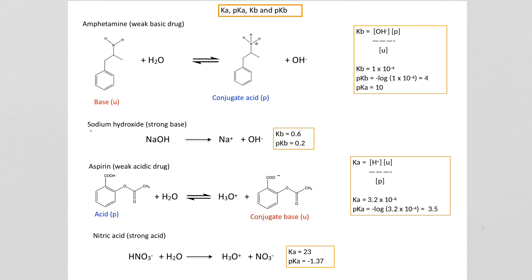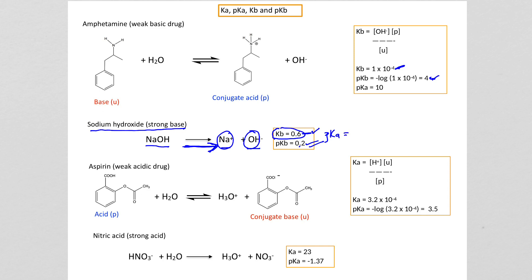Compare that to a strong base such as sodium hydroxide. How much sodium hydroxide breaks down to give sodium and hydroxide? That KB is 0.6 — a much bigger number compared to 1×10⁻⁴, meaning a lot more sodium hydroxide breaks down into products. Taking the minus log of KB gives 0.2 for pKB, much lower than 4 for the weak base. The pKA for sodium hydroxide is 13.8, since 13.8 plus 0.2 equals 14.